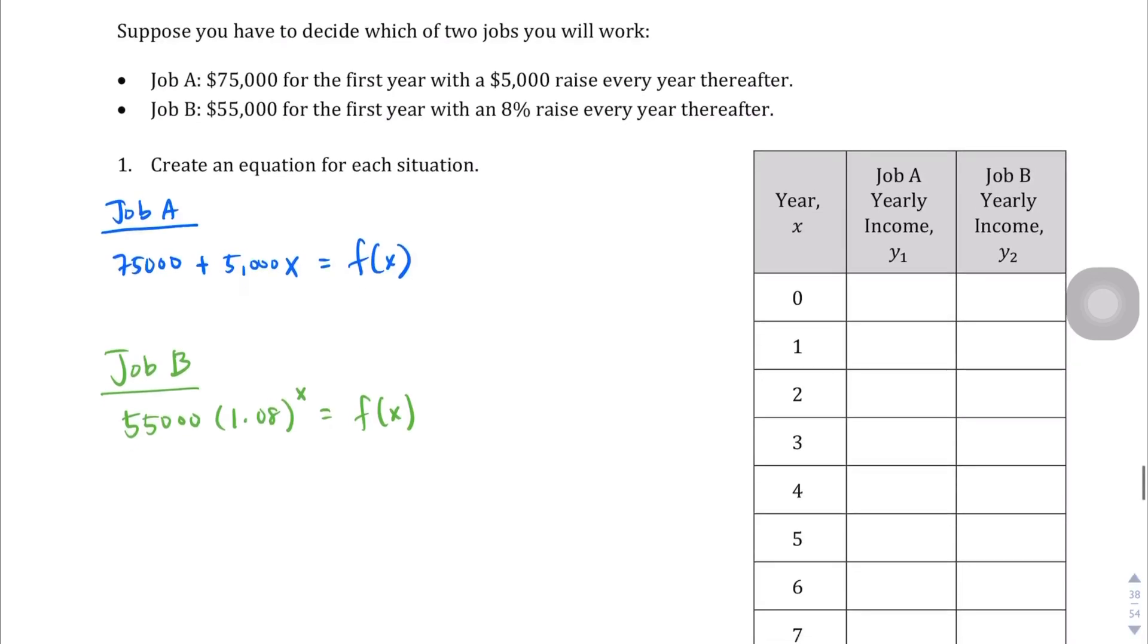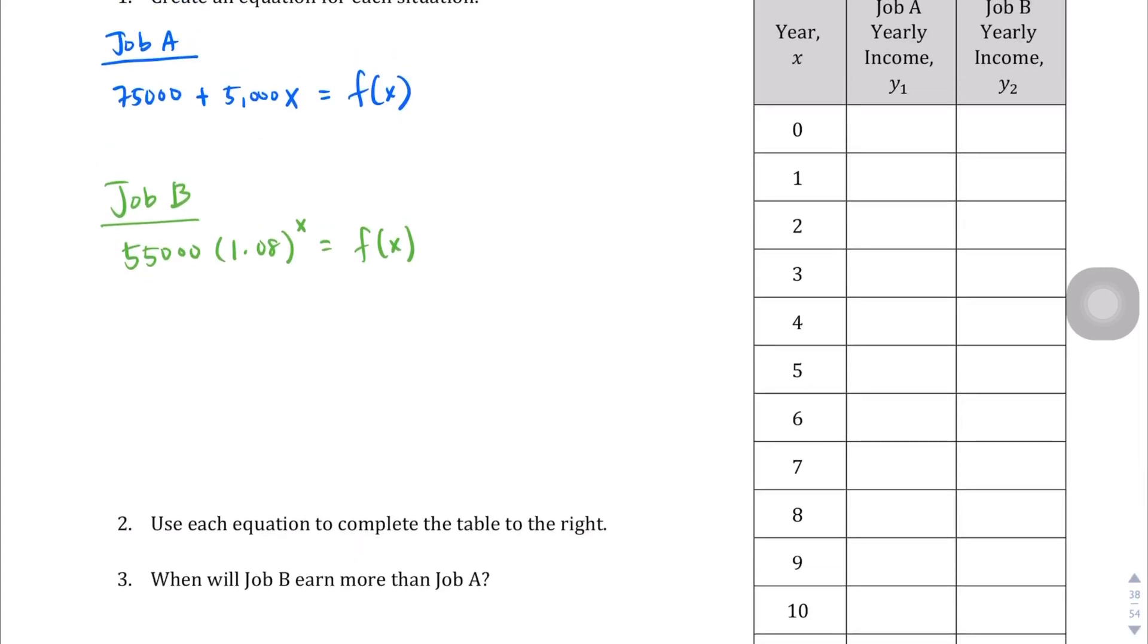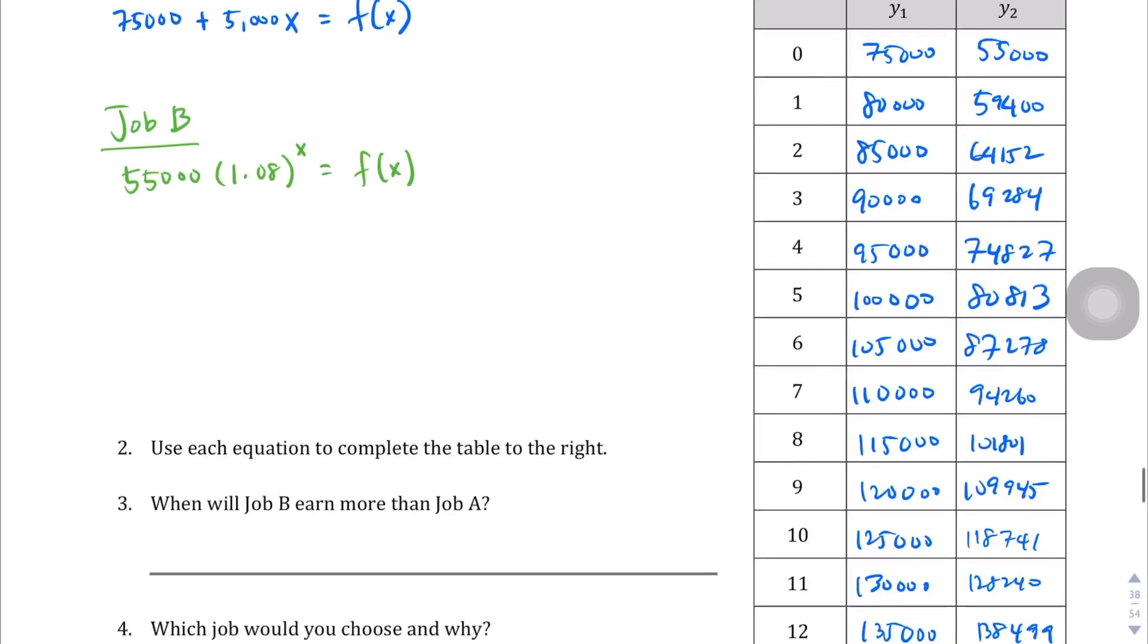Now that we've created the equations, you can fill out the table on the right. I'm going to kind of fast forward through this. So you can punch this into Desmos, or you can create a table on your own and manually calculate. So we fill out the table. And let's answer the question based on the table values. When will job B earn more than job A? Well, if we take a look at the table, the turning point is right here at the end, after 12 years. Because at year 11, you're still making more at job A, but not by much. But in year 12, you're earning about $3,500 more at job B at that point. So 12 years.